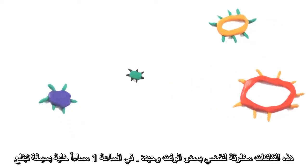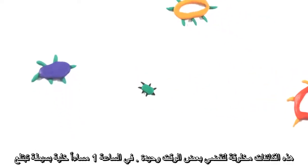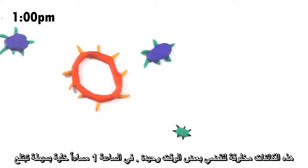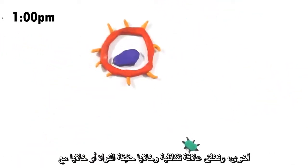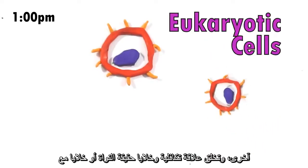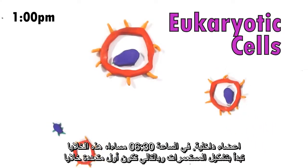However, these organisms are destined to spend quite some time alone. At 1pm, a simple cell engulfs another, creating a symbiotic relationship and the first eukaryotic cells, or cells with internal organs.